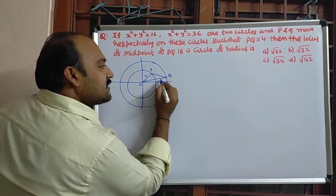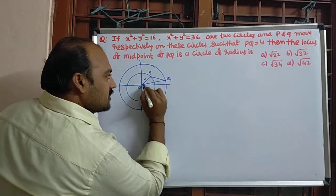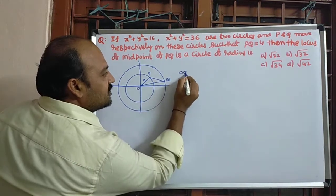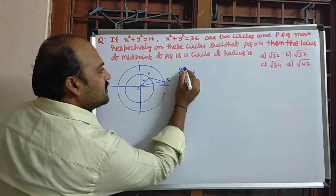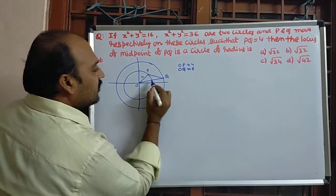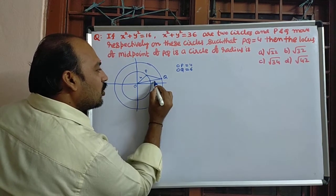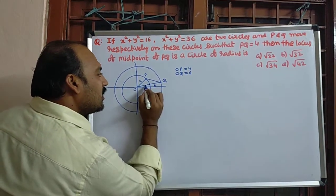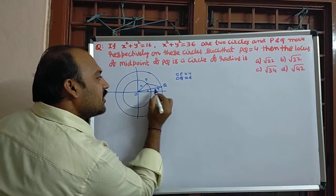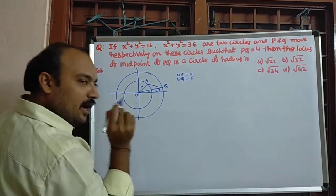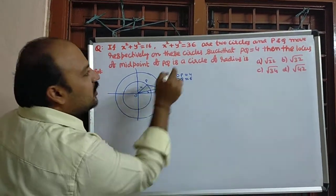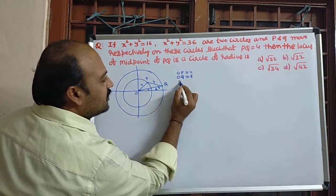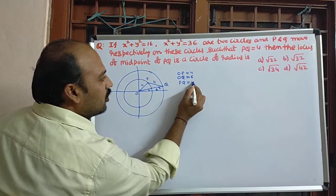From here to here it is 6 total 6 units. OQ is equal to 6, OP is equal to 4. That means here total 6, from here to here 3 units, from here to here 3 units. And the value of PQ also mentioned as 4. PQ is equal to 4.